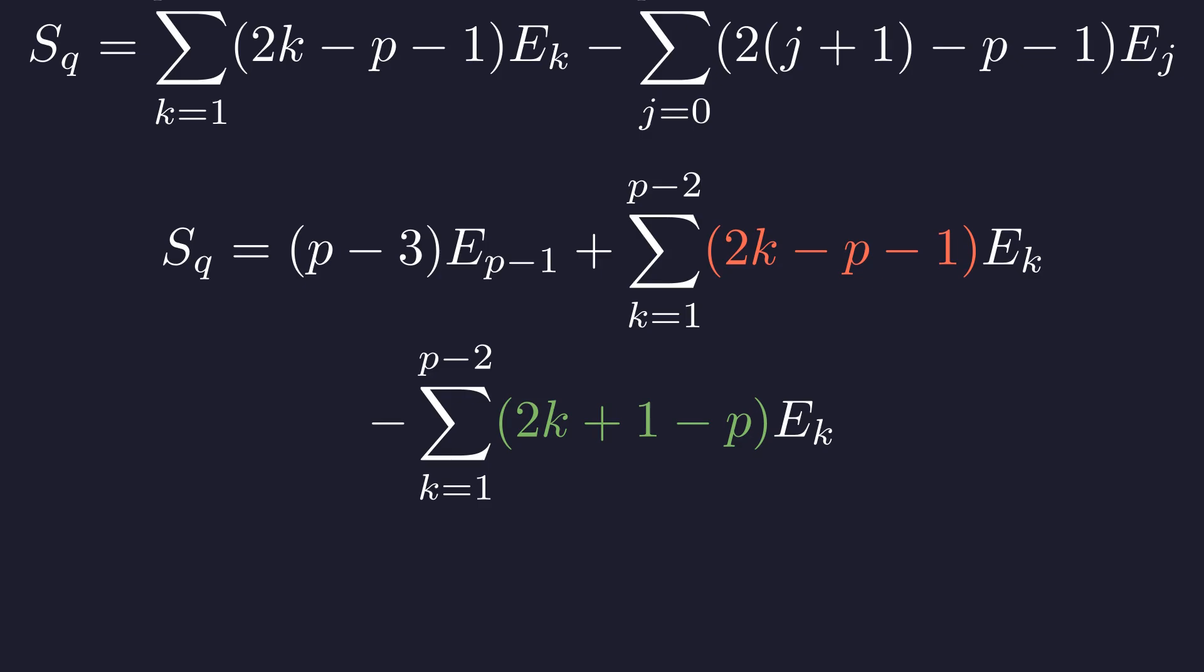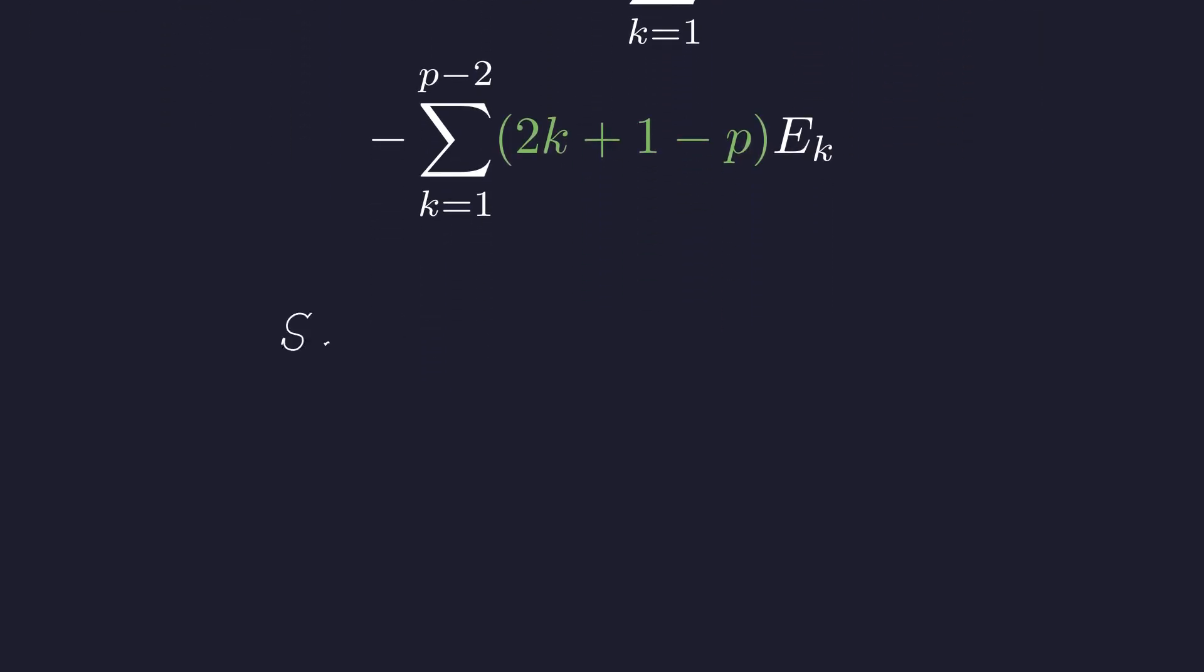Now comes the beautiful moment: these two sums have almost identical structure. Let's see what happens when we combine them by looking at the difference in their coefficients. The coefficients differ by exactly negative 2, and when the dust settles we get this much cleaner expression. This is the power of summation by parts—it's transformed our complicated sum into something we can actually work with.